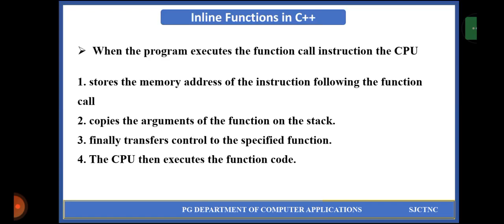For that, we are introducing the inline function to avoid all these steps. The first step: it stores the memory address of the instruction following the function call. Second, it copies the arguments of the function onto the stack. For a function having arguments, those arguments will be copied to the stack. Finally, it transfers control to the specified function. The CPU then executes the function code.